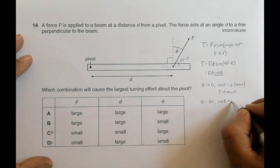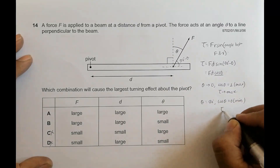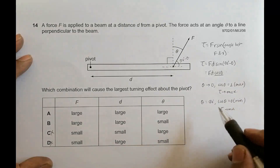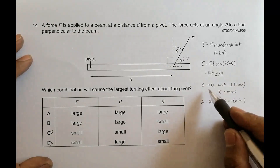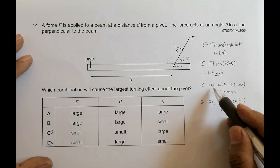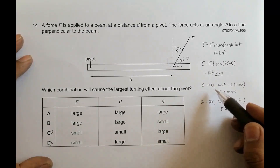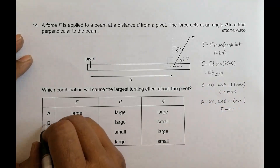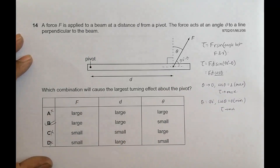Since we need large tau, we need tau to be maximum, which means theta should equal zero — so theta should have a small value, not a large value. This is shown by choice B. Choice A is therefore disqualified.